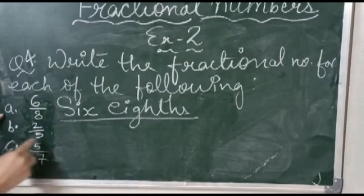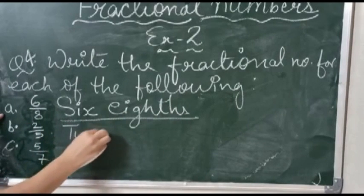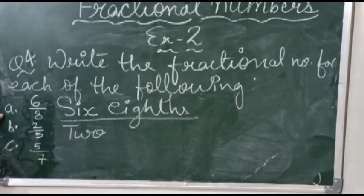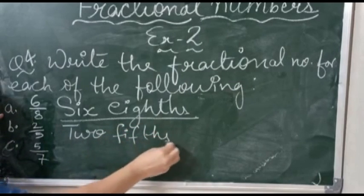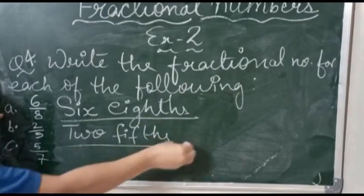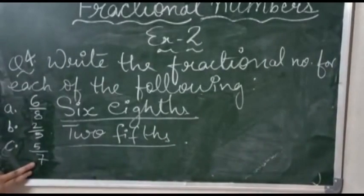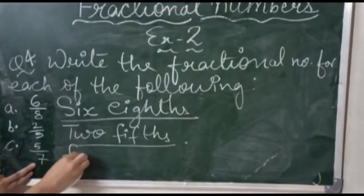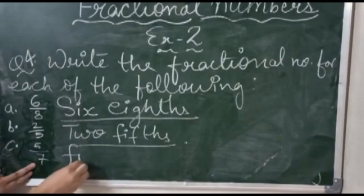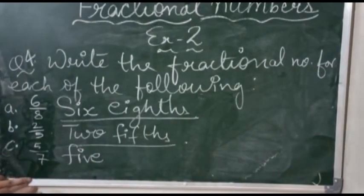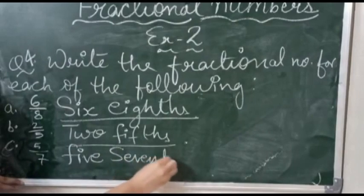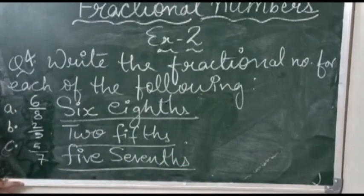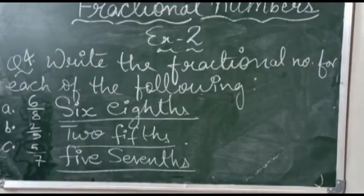So 2 by 5 is called two-fifths. The next one is 5 upon 7. For the numerator we call 5, and for the denominator we call 'sevenths' (S-E-V-E-N-T-H-S). So this is called five-sevenths. This completes question number 4, where we write the names of the fractional numbers.